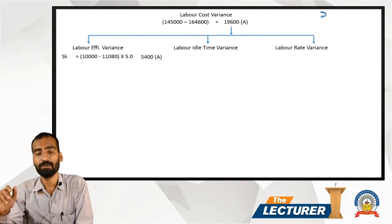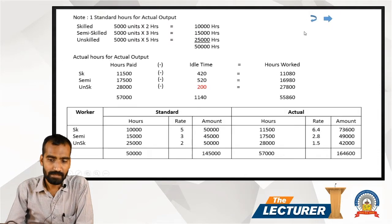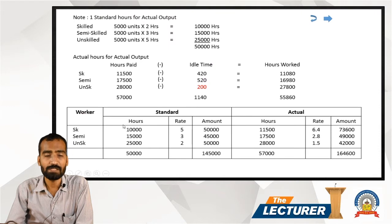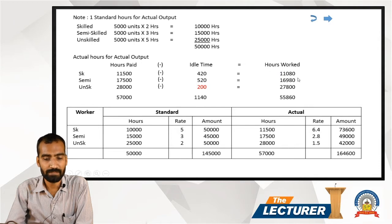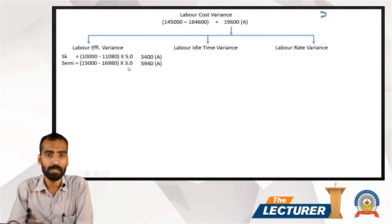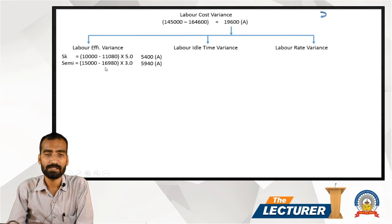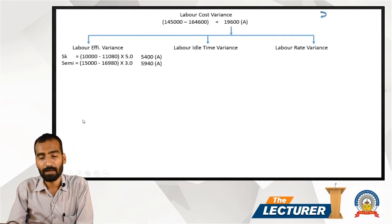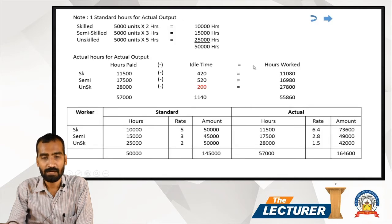Semi-skilled: (15,000 − 16,980) × 3 = 5,940 Adverse. Reason: 15,000 standard hours were planned but 16,980 hours were used to complete the task. Unskilled: (25,000 − 27,800) × 2 = 5,600 Adverse. Total Labor Efficiency Variance = 16,940 Adverse.